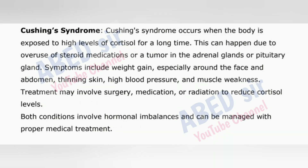Cushing's Syndrome occurs when the body is exposed to high levels of cortisol for a long time. This can happen due to overuse of steroid medications or a tumor in the adrenal glands or pituitary gland. Symptoms include weight gain especially around the face and abdomen, thinning skin, high blood pressure and muscle weakness. Treatment may involve surgery, medication or radiation to reduce cortisol levels. Both conditions involve hormonal imbalances and can be managed with proper medical treatment.